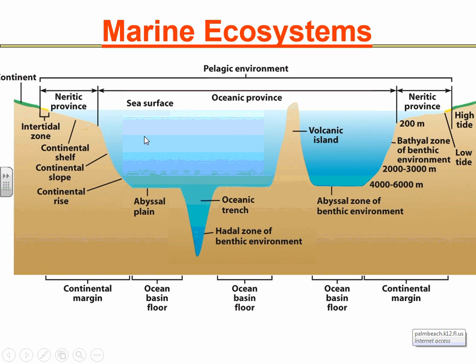Starting with the intertidal zone — this yellow area here — you can think of it as the area between high and low tide. Tides happen due to the moon's gravitational pull, so twice a day we have high and low tides. The intertidal zone is that area along the shoreline. When you go to the beach and put your chair down and the tides come in, that is basically the intertidal zone.